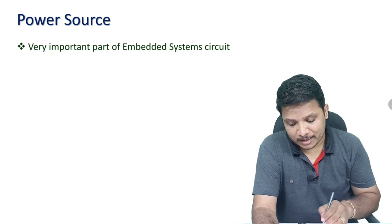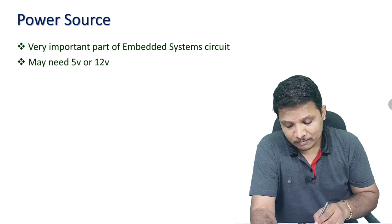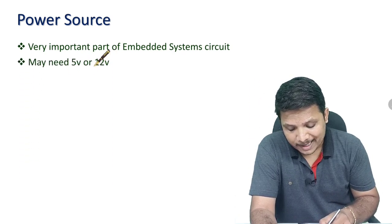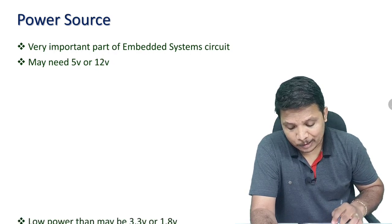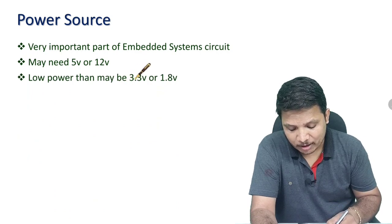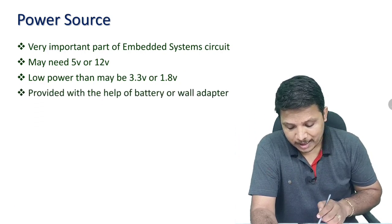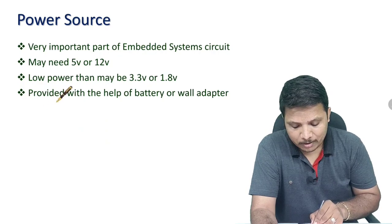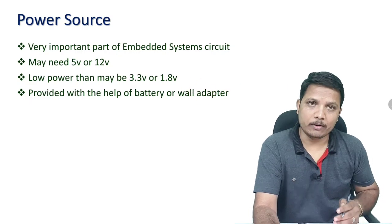If your embedded system is stationary, by using a wall adapter we can provide power to the embedded system. Power source is very essential, and we may need a 5 to 12 volt battery supply. For low power embedded systems, we may need 3.3 volts or 1.8 volts. Usually we have that power source with a battery or a wall adapter.